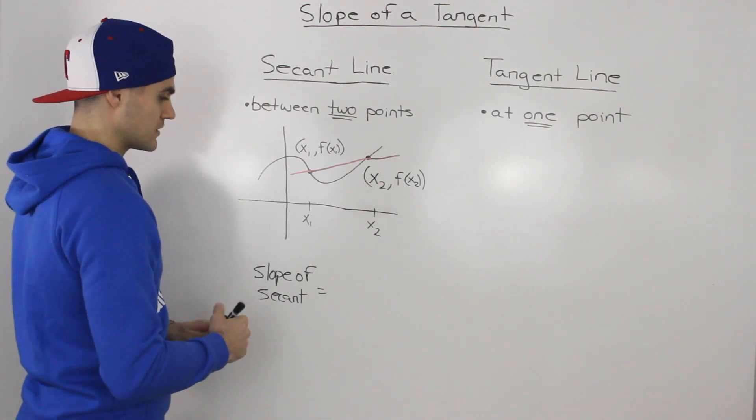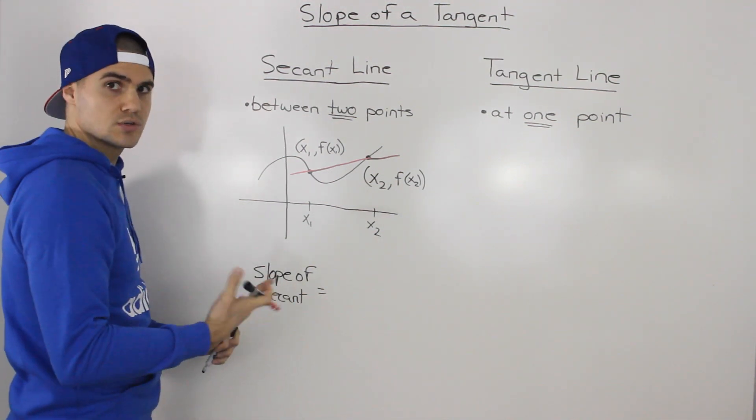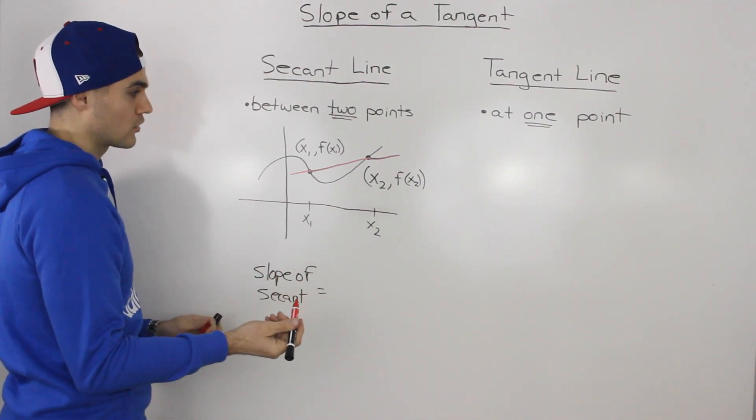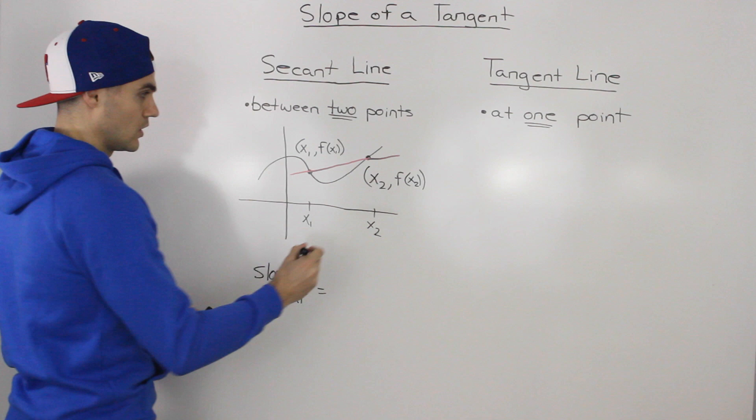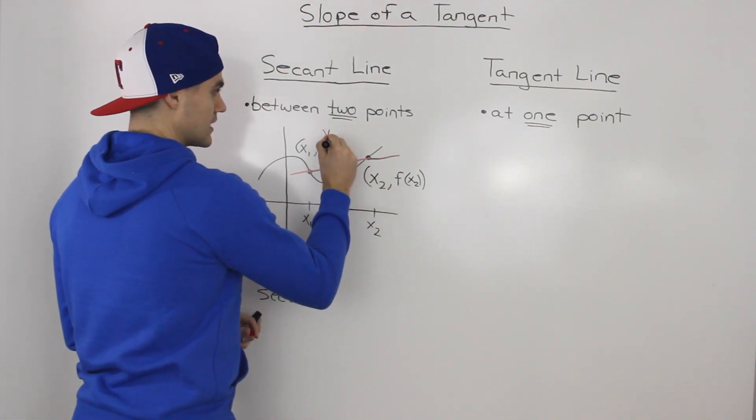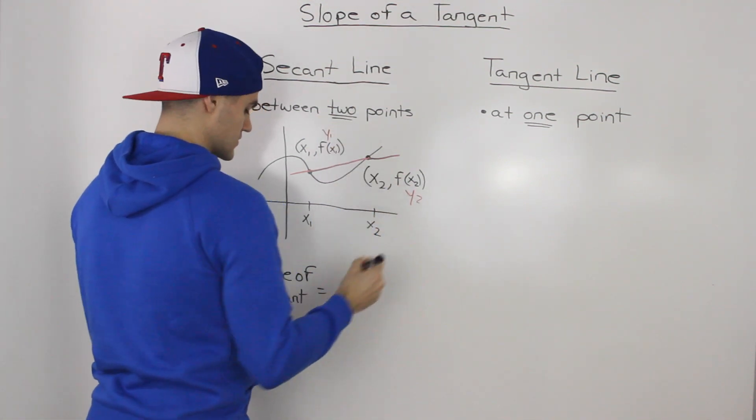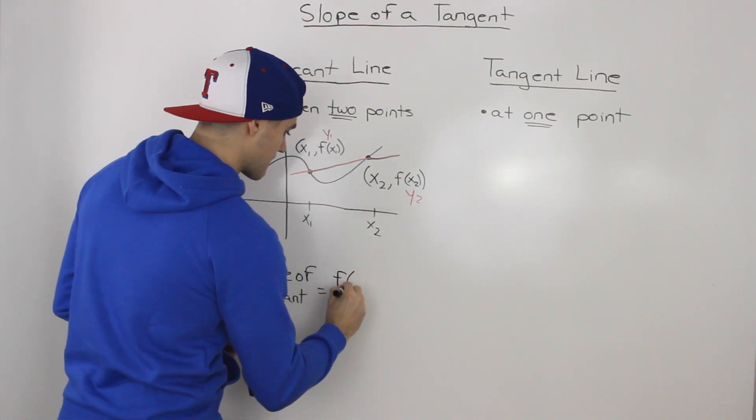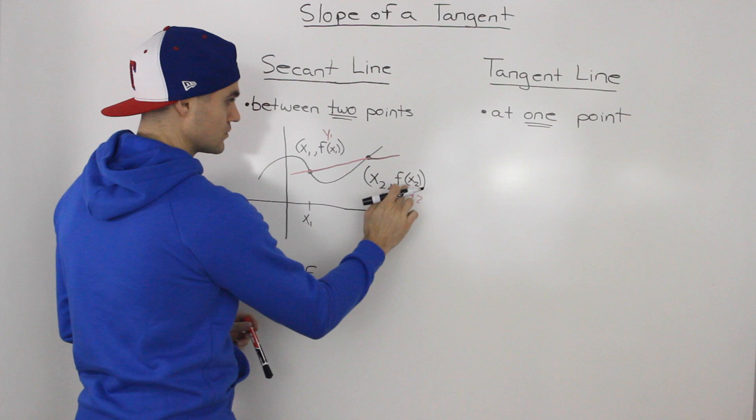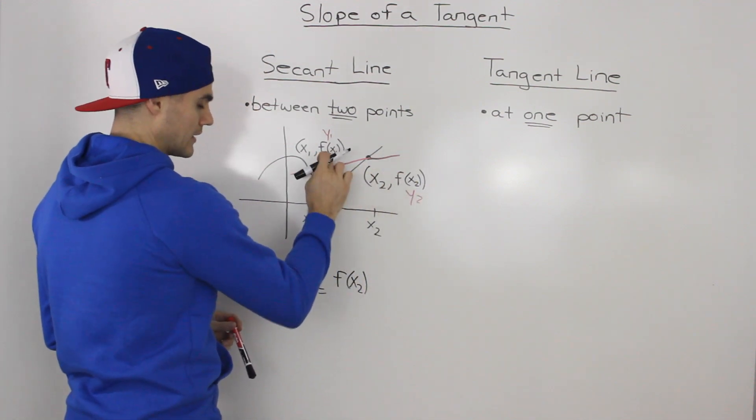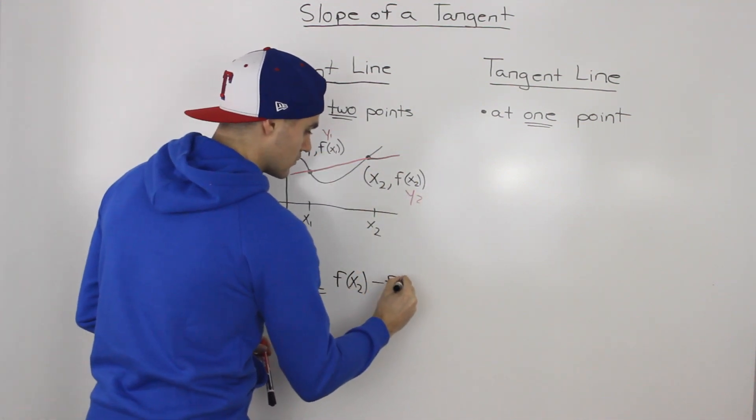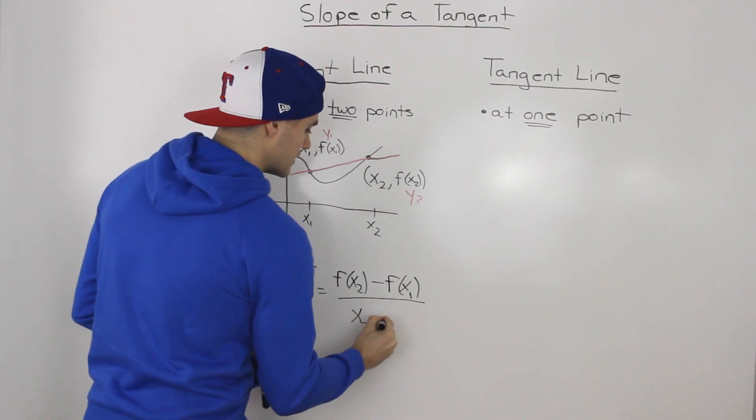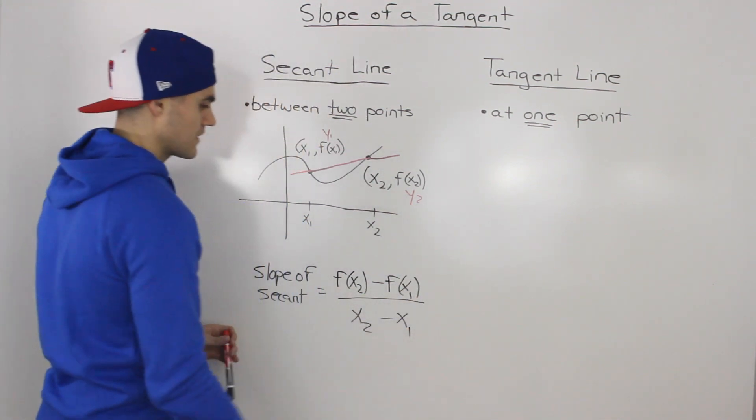So to find the slope of the secant, we can just use the slope formula: y2 minus y1 over x2 minus x1, where this here is y1 and this here is y2. So we would just have f of x2, which is this y value here, minus the y value there, which is f of x1, all over the difference in the x values.